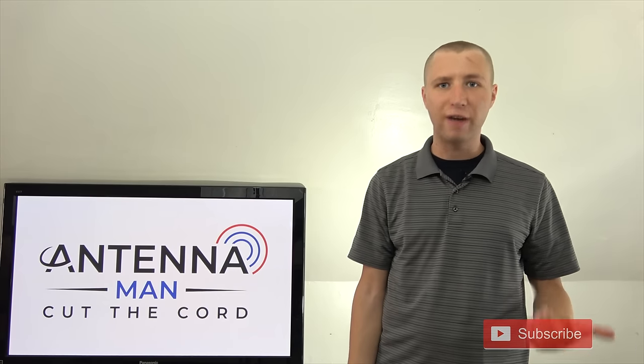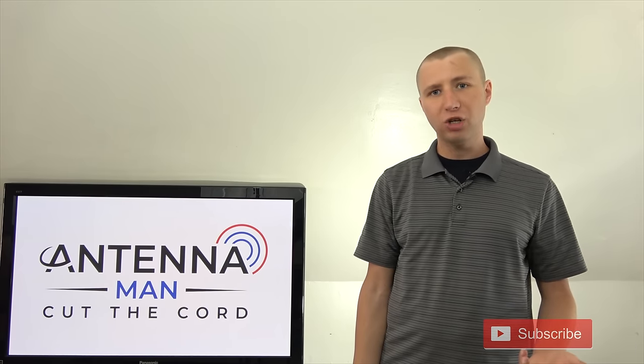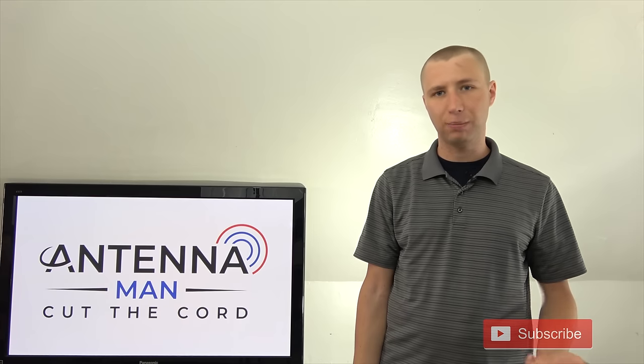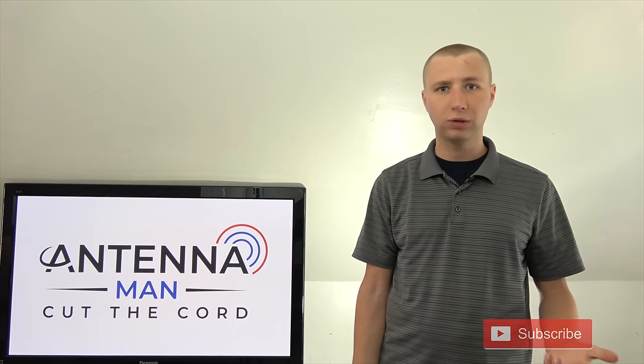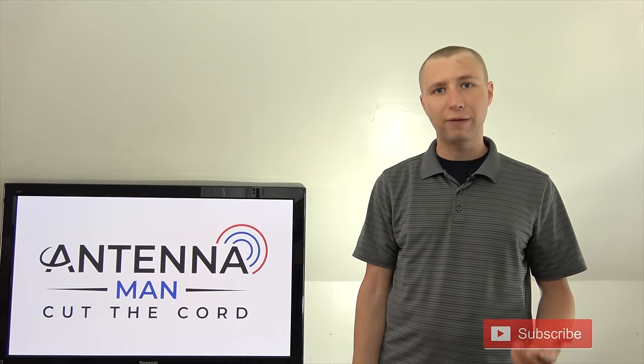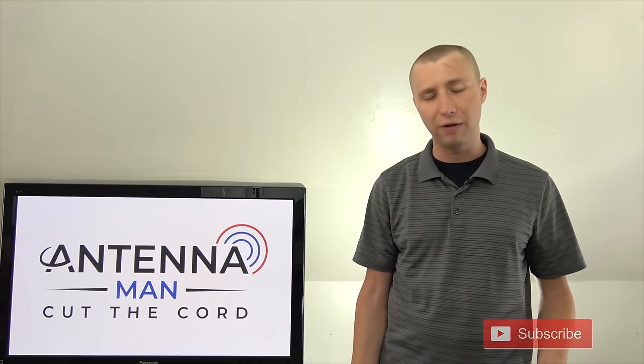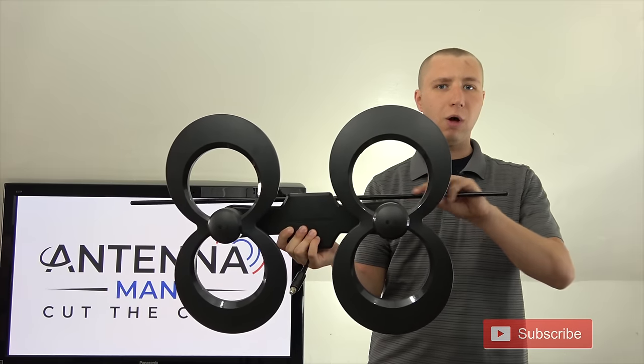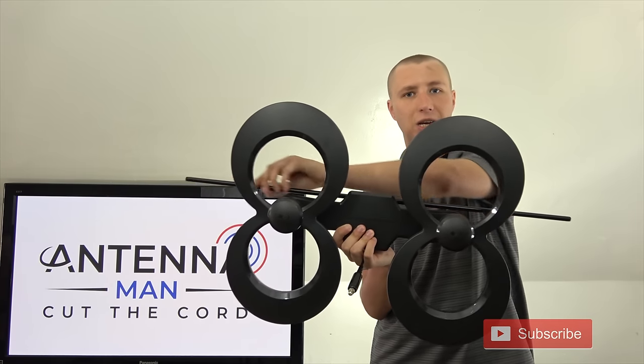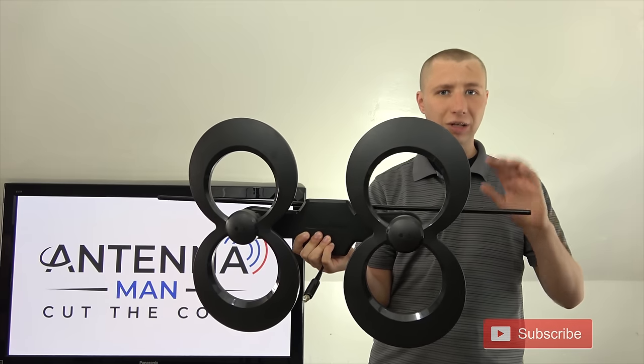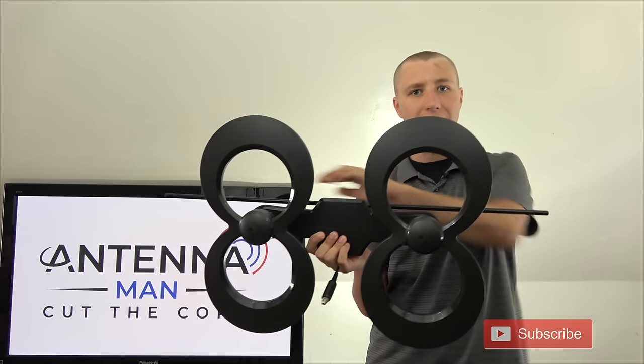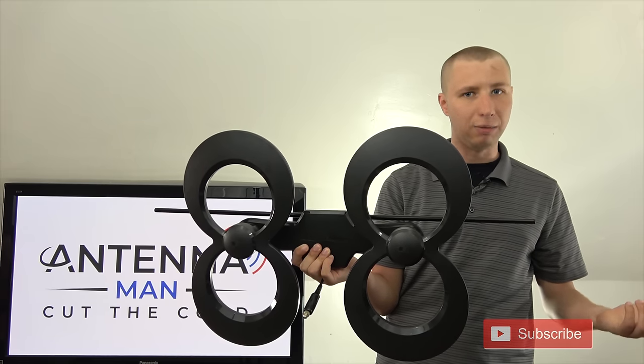What is VHF and UHF? VHF has to do with TV stations that broadcast on channels 2 through 13, specifically 2 through 6 for low VHF and 7 through 13 for high VHF. They typically require a longer antenna element like what you see here in order to be reliably picked up. So if you see an antenna that does not have a long element like this, it will not pick up VHF signals reliably.